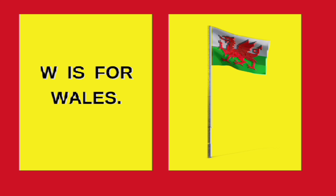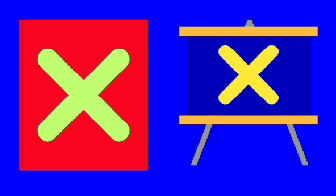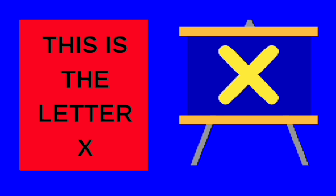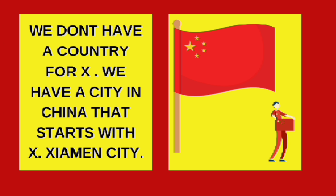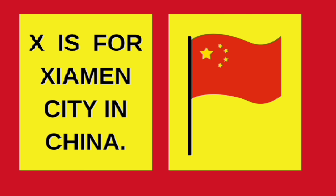This is the letter W. I don't have a country for X. We have a city in China that starts with X — Xiamen City. X is for Xiamen City in China.